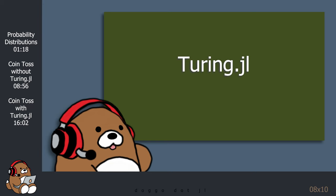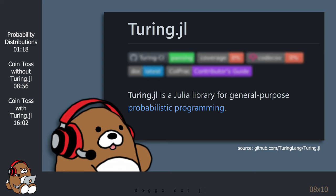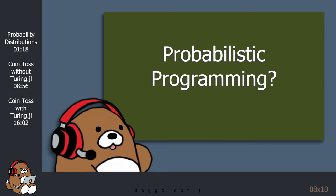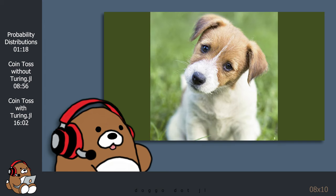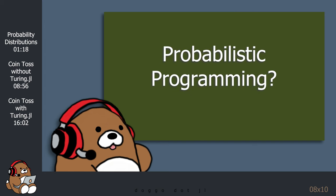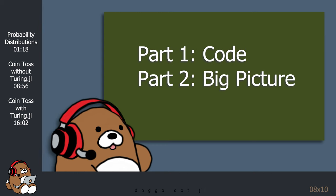In this video, I will be introducing the Turing.jl package. According to its GitHub page, Turing.jl is a Julia library for general-purpose probabilistic programming. So, what is probabilistic programming? It turns out that this is a surprisingly difficult question to answer. So instead of trying to answer the question, I'm going to split this intro to Turing.jl into two tutorials.